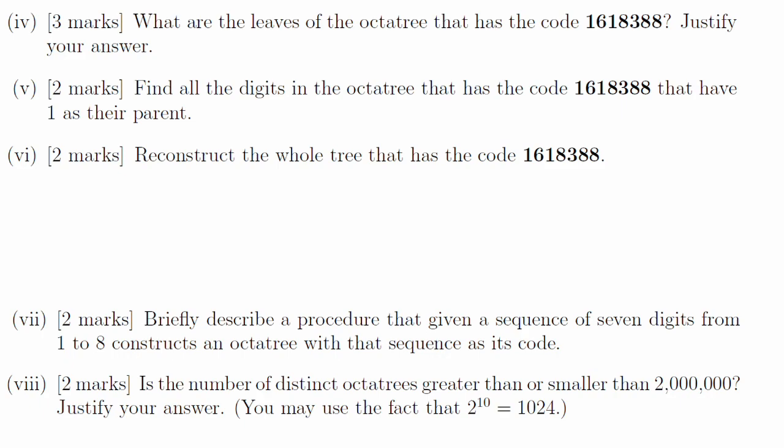So the leaves are 2 and 5 underneath 1. Part 6, the tree looks like this. Part 7, we can generalise that procedure to keep identifying the smallest leaf, removing it and seeing what the consequences are, constructing the parent of each leaf, and then rebuilding the tree from the top down. Part 8, the number of octa trees is the number of sequences. There are 7 digits, so 8 to the power of 7 sequences is much larger than 2 million, so there are more than 2 million distinct octa trees.